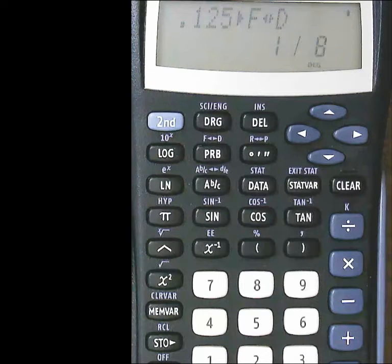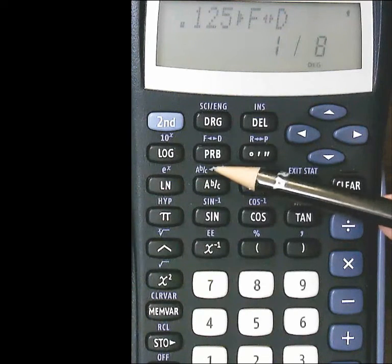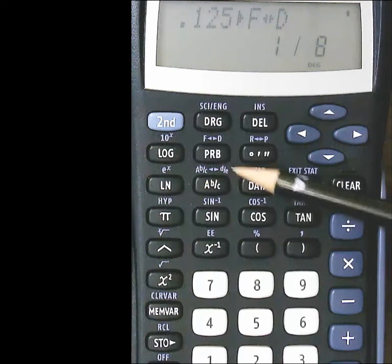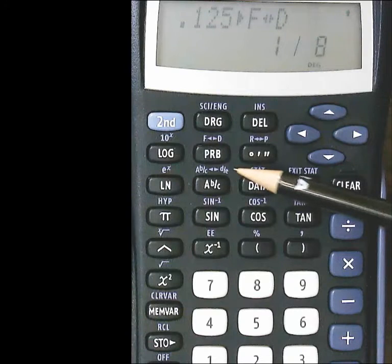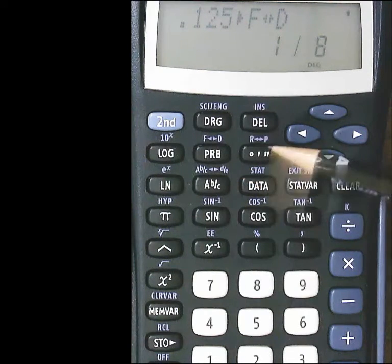One final other thing you'll notice up above the fraction key, it probably says A, B over C, then the little arrows, and then D over E. That's how you could take a mixed number and change it into an improper fraction, or an improper fraction back to a mixed number.